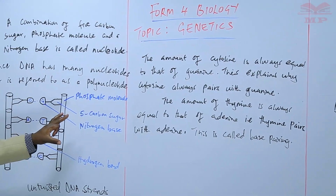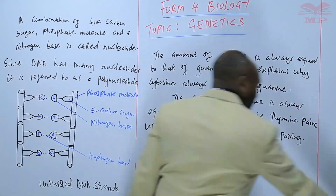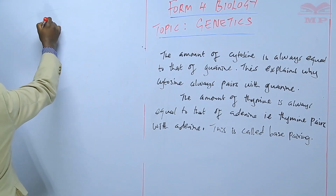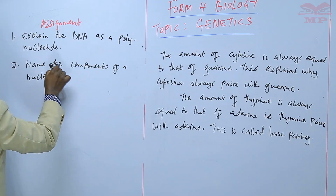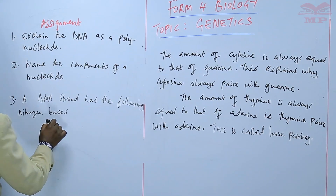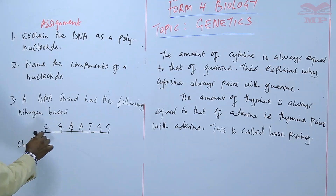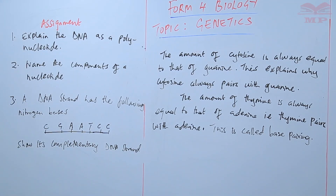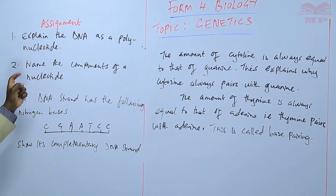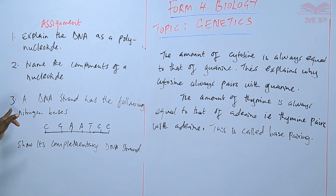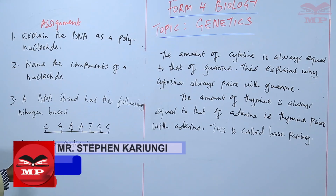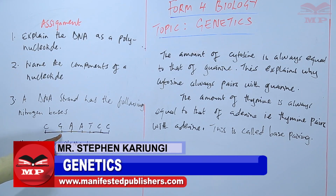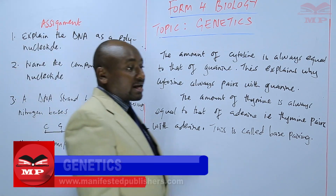The diagram illustrates base pairing while also showing the other components of the DNA — the phosphate and the five-carbon sugar. We'll have an assignment: one, explain the DNA as a polynucleotide; two, name the components of a nucleotide; and three, a DNA strand has the following nitrogen bases — C, G, A, T, C, C — show its complementary DNA strand. We'll stop there until next time. Goodbye.